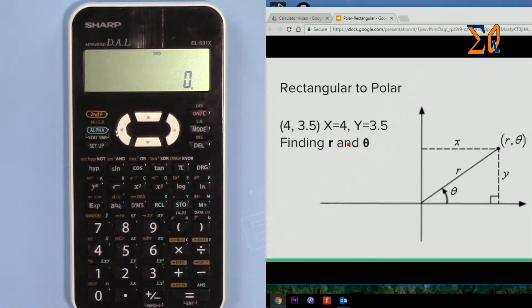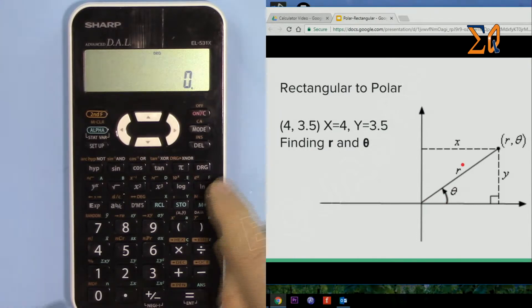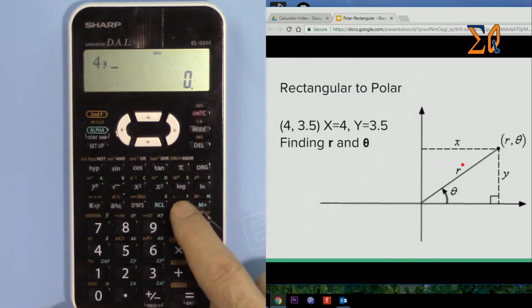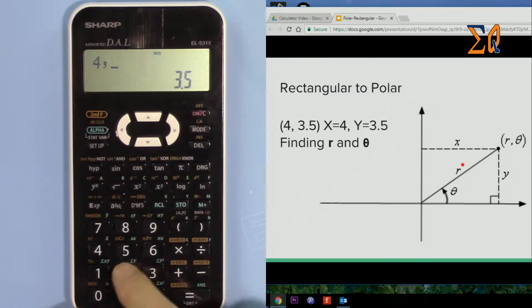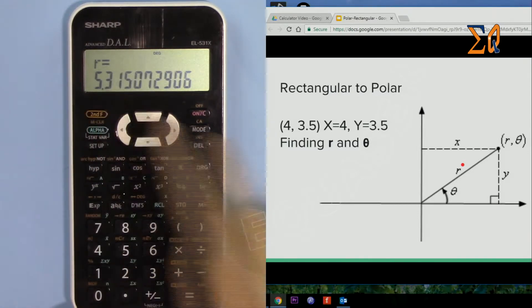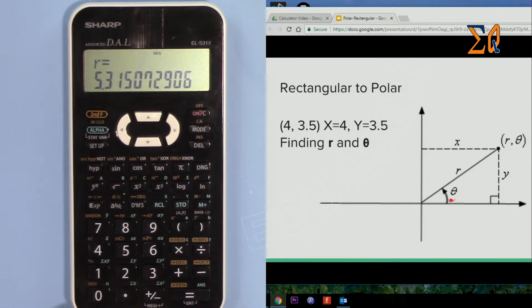So now let's say you have X is 4, Y is 3.5. We want to find theta and r. We are in degree mode, that's fine. 4, second function, comma, 3.5. And then second function, this time press 8 with the r theta symbol. So r is 5.3, this magnitude. And then the theta - second function and then this button - you see 41.18.